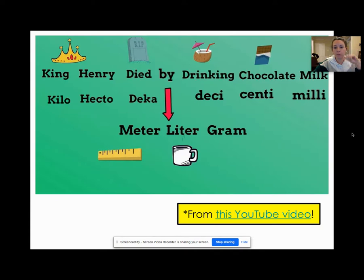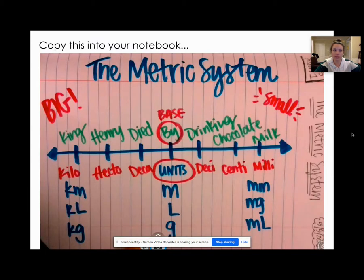This is a screenshot I took from the YouTube video that I put right here, but this is what we're going through today. King Henry died by drinking chocolate milk. So kilo, hecto, deca - which this is from a different country, we spell it DECA - desi, senti, and mili, with the base being in the middle: meter, liter, or gram. Some people have heard this as King Henry died unexpectedly drinking chocolate milk. That's because they put a U for unit instead of a B for base. However you want to remember it.